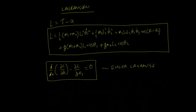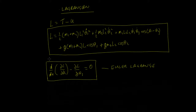Hi there. In this video we're going to continue with the derivation of the equations of motion of a double pendulum. In the first video we saw the derivation of the Lagrangian. The Lagrangian, given letter L, is equal to the kinetic energy minus the potential energy. The top line is the kinetic energy of the double pendulum and the bottom line is the potential energy. We're going to use the calculus of variations and the Euler-Lagrange method in order to derive the equations of motion.